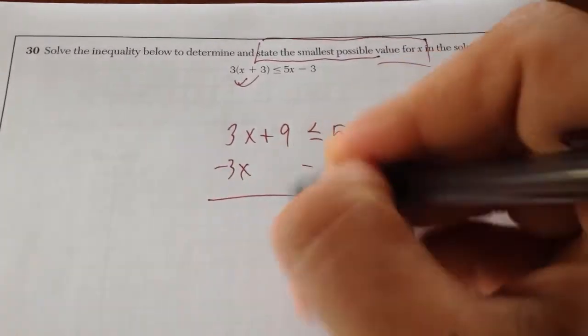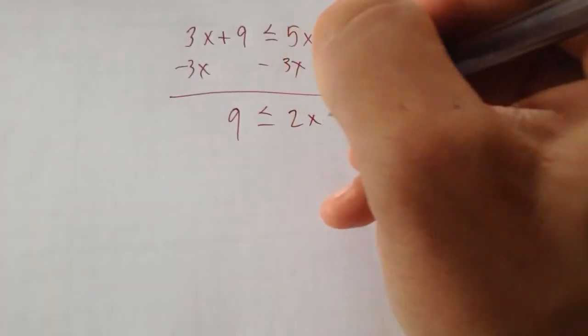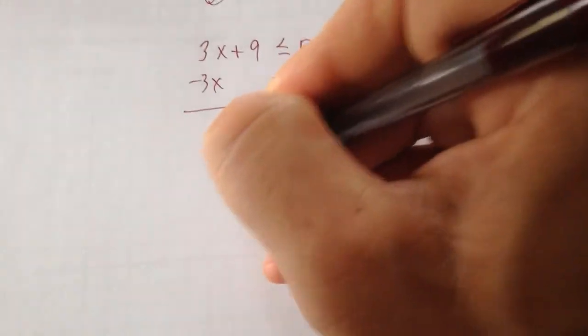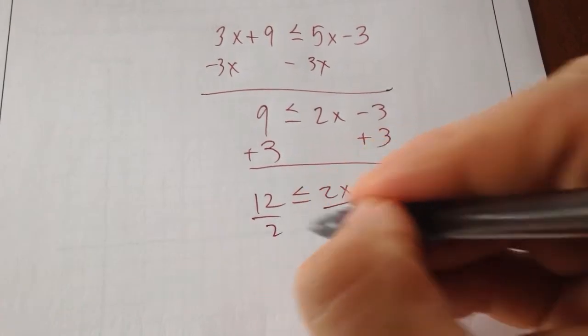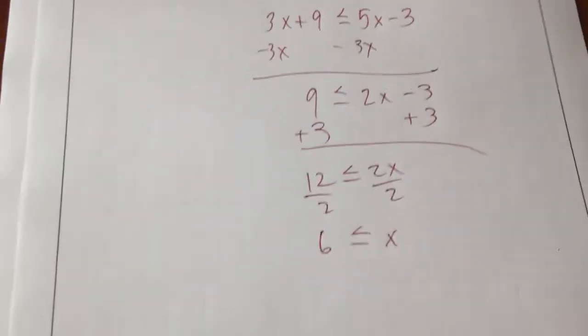I'm going to subtract 3x, subtract 3x. I get 9 is less than or equal to 2x minus 3. I'm going to add 3. I get 12 is less than or equal to 2x. Divide both sides by 2. I get x is greater than or equal to 6.